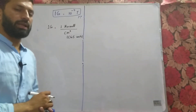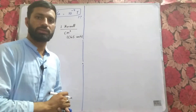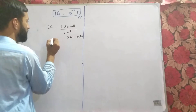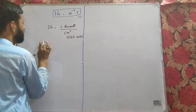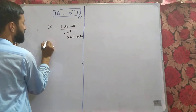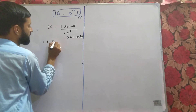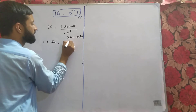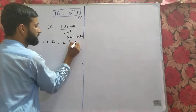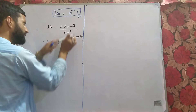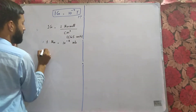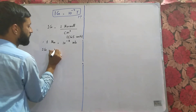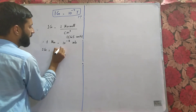One Maxwell is equal to 10 raised to power minus 8 Weber. So we will plug in this value: one Gauss becomes equal to 10 raised to power minus 8 Weber per centimeter square.